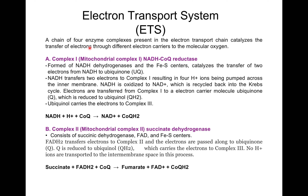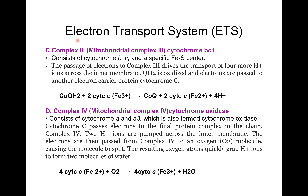A chain of four enzyme complexes present in the electron transport chain catalyzes the transfer of electrons through different electron carriers to molecular oxygen. Complex 1 is NADH coenzyme Q reductase. Complex 2 is succinate dehydrogenase. Complex 3 is cytochrome BC1. Complex 4 is cytochrome oxidase.